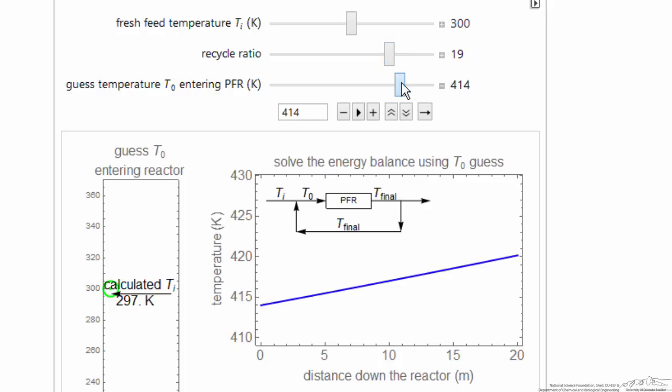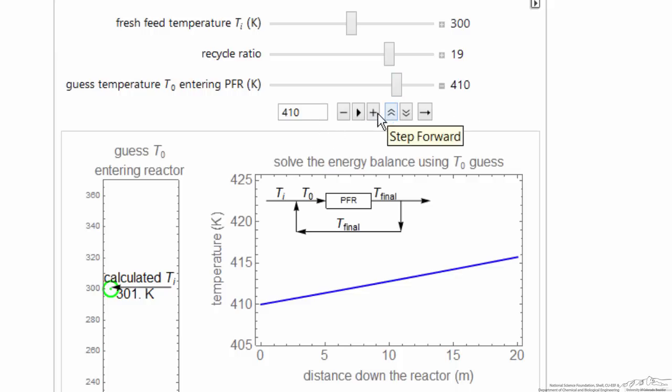I'm going to vary T0, and right about there, we're pretty close. 301, so we can get it closer, but that's close enough. At 410, and it looks like 411 we're right on. So 411 is the correct temperature for T0.